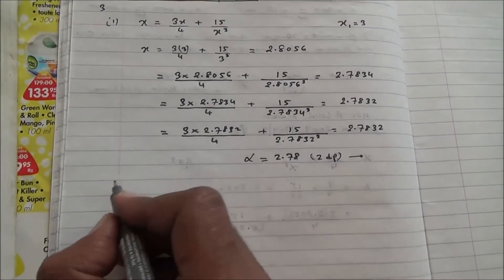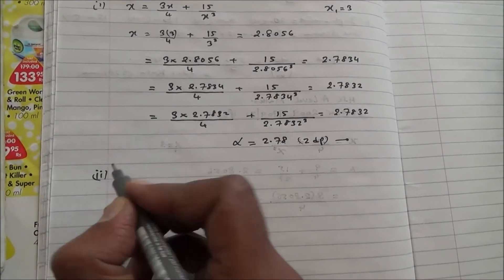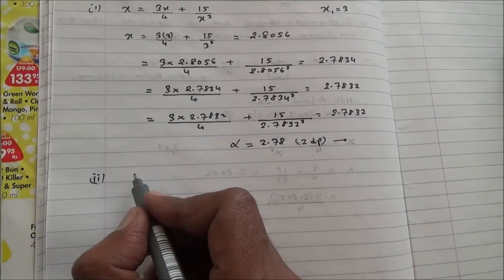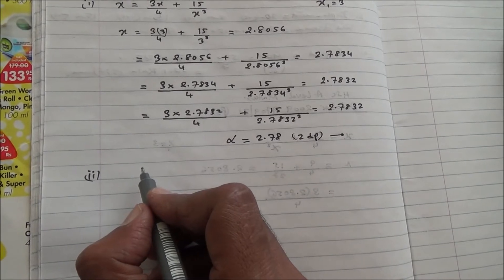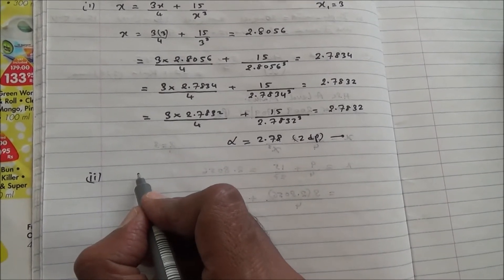Now for the second part, we need to state a formula and then find the exact value of alpha. So we have a formula.